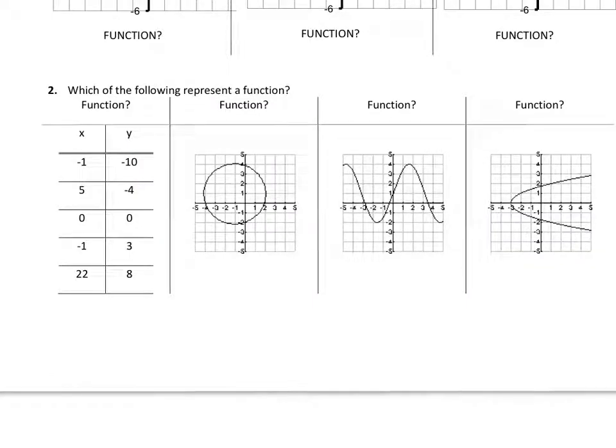Next example. Which of the following represent a function? So here I'm looking, my table of values, for every value of x, I can only have one matching y. And when I look through my table, I only really have one point of concern. I have x being equal to negative 1 happening at two different spots. So if x is equal to negative 1, I get a y value of negative 10, but the second one gives me a y value of 3.